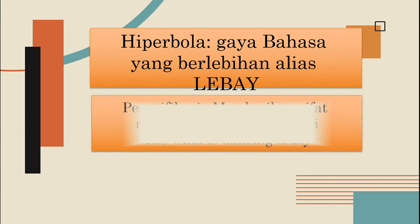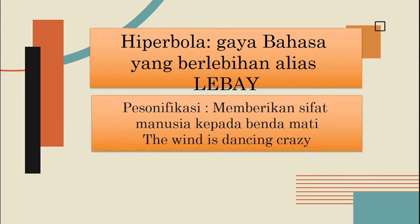Majas selanjutnya adalah personifikasi: memberikan sifat manusia kepada benda mati. Contohnya: the wind is dancing crazy. Jadi, udara itu sedang berjoget dengan gilanya. Ini memberikan sifat joget — yang kan sifat manusia — seolah-olah diberikan kepada benda mati.